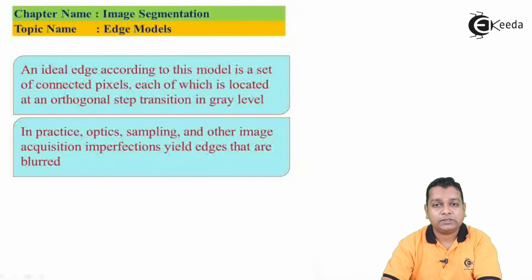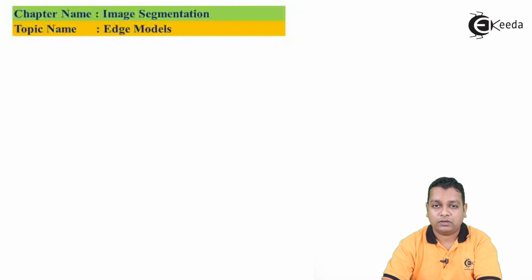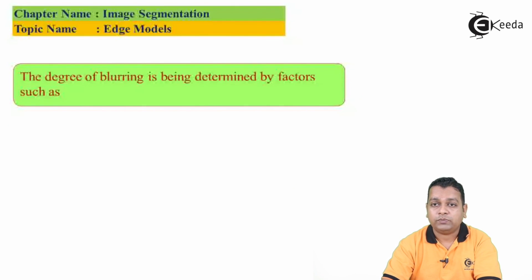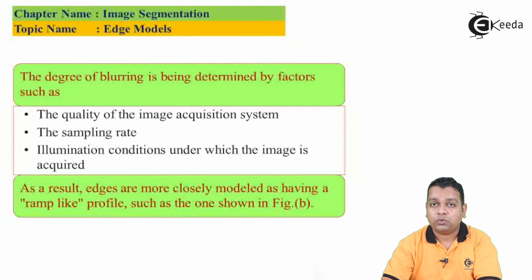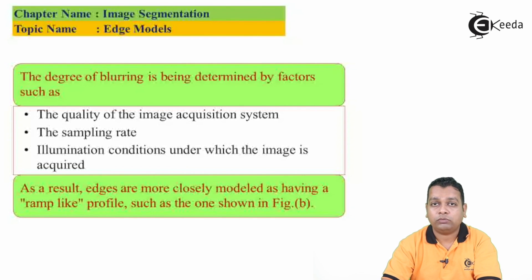In practice, optics, sampling, and other image acquisition imperfections yield edges that are blurred. The degree of blurring is determined by factors like the quality of the image acquisition system, the sampling rate, and the illumination conditions under which the image is acquired. As a result, edges are more closely modeled as having ramp-like profiles.